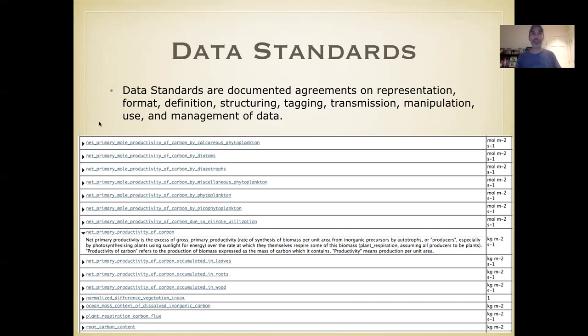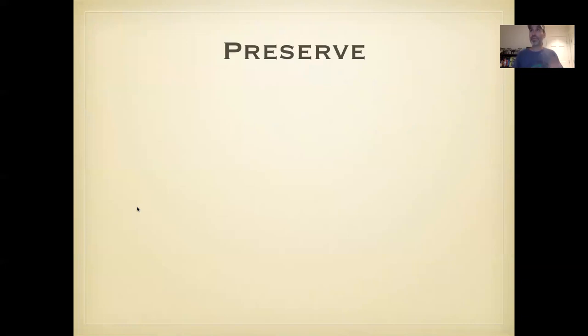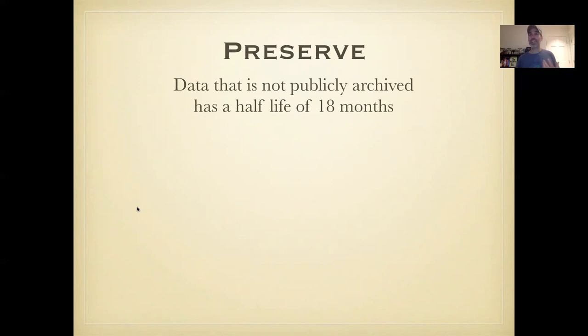We did our QA/QC, we did our metadata, the next step is to make sure that we are preserving the data and we have a plan for what we're doing this. An important part of data preservation is that whenever possible, and it's not always possible, whenever possible data should be publicly archived. It's been shown that data that is not publicly archived becomes unavailable very quickly. One estimate is a half life of 18 months.